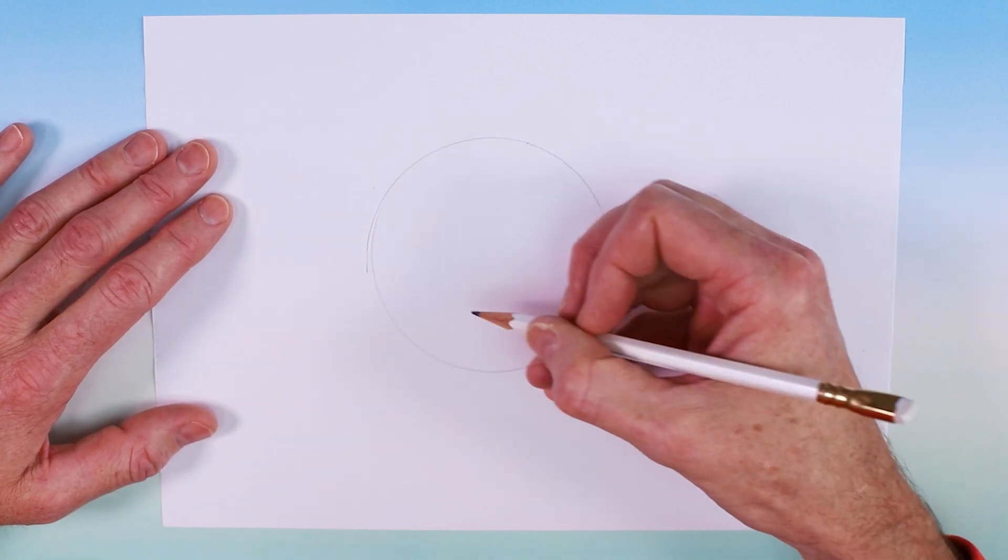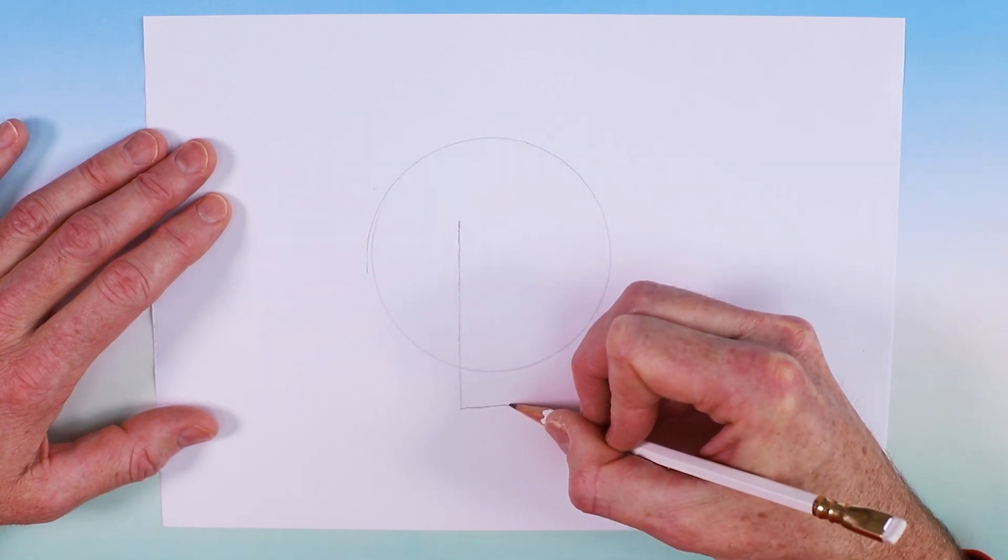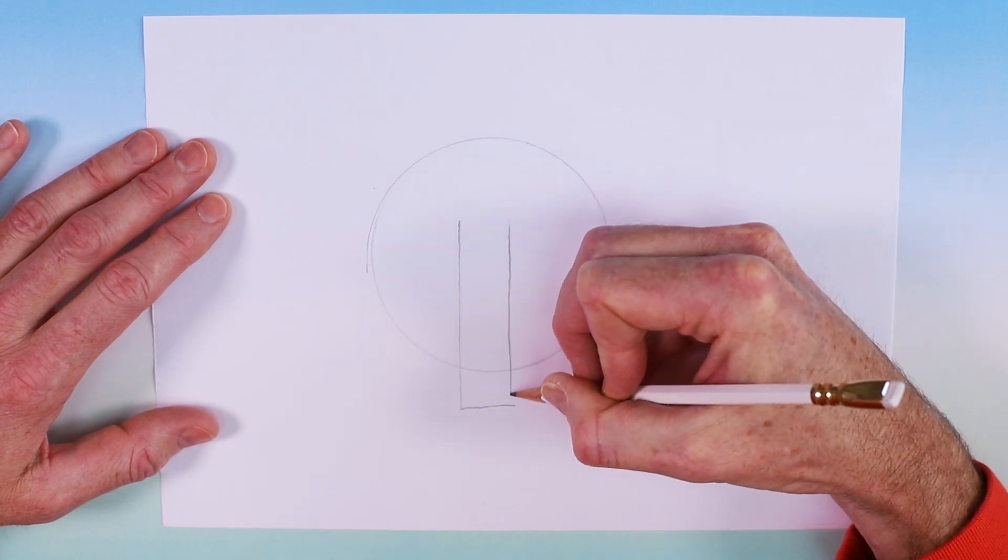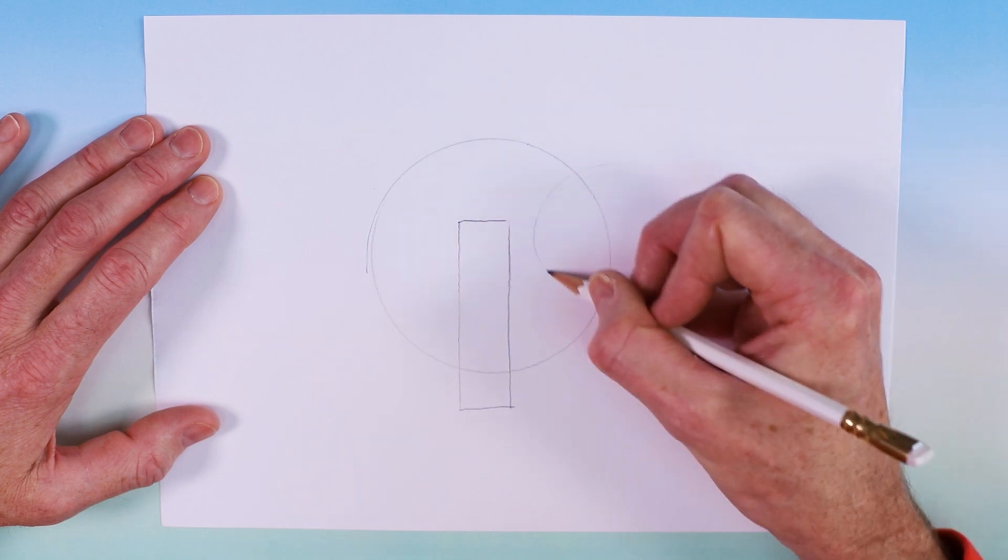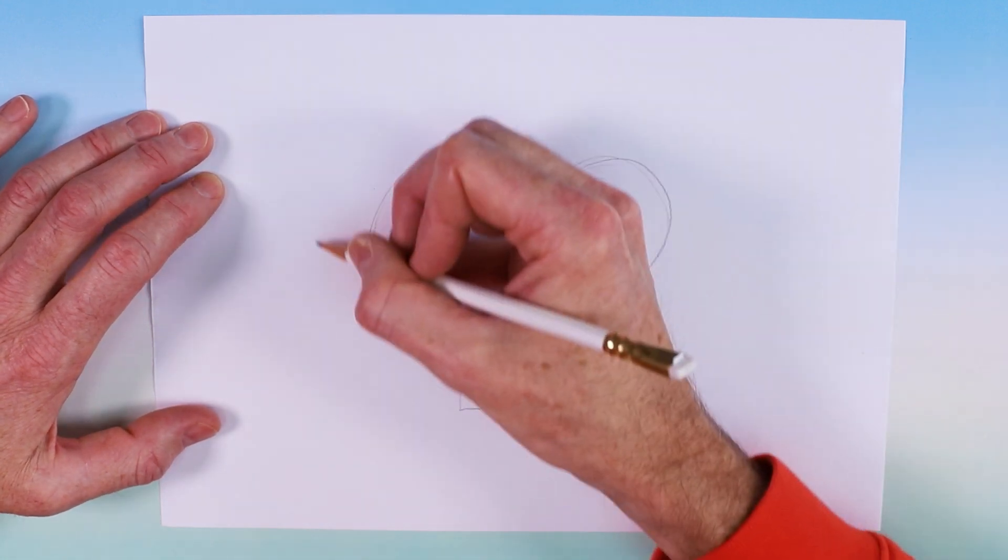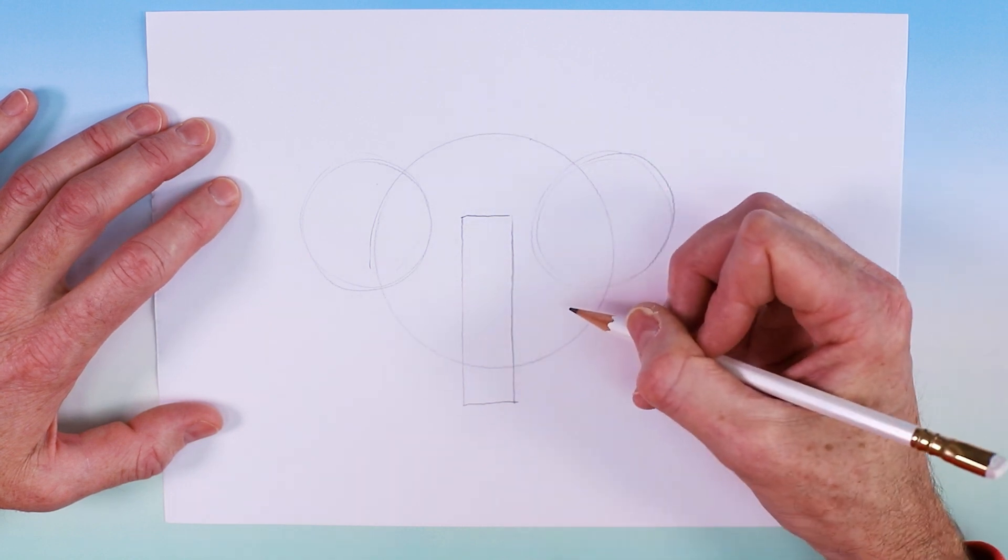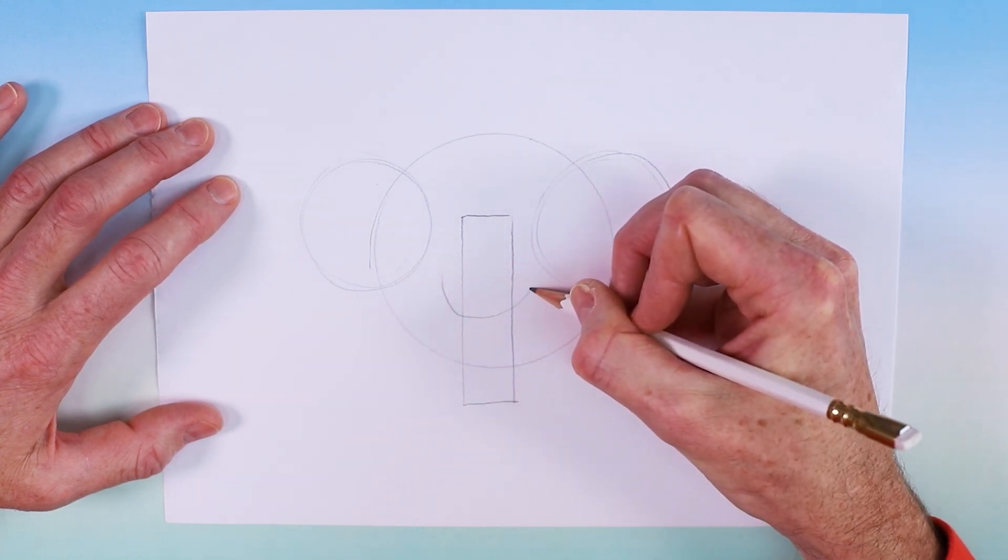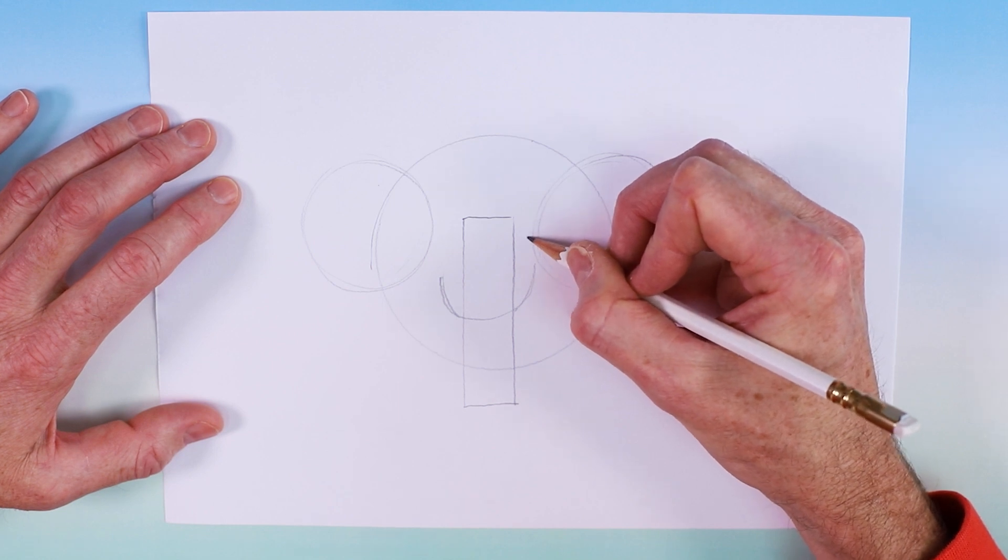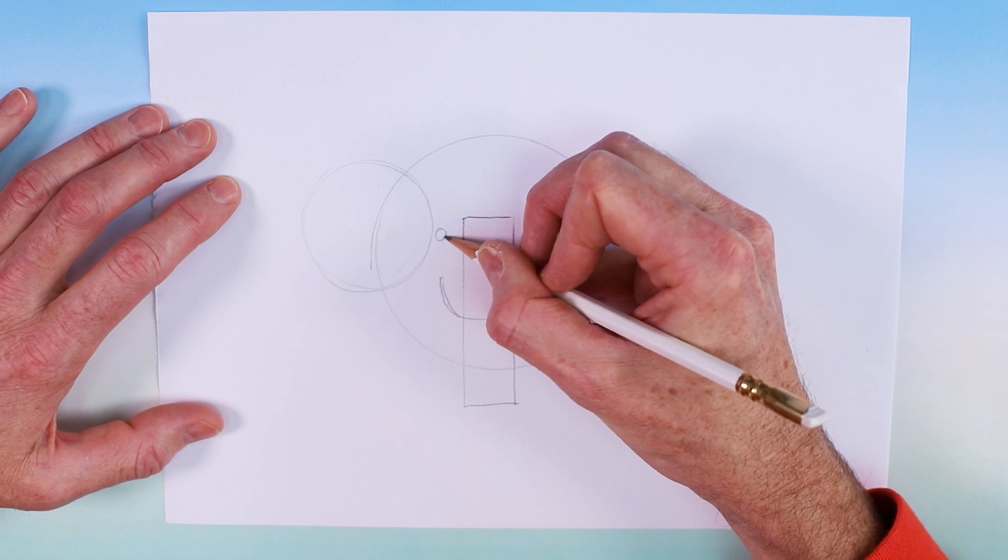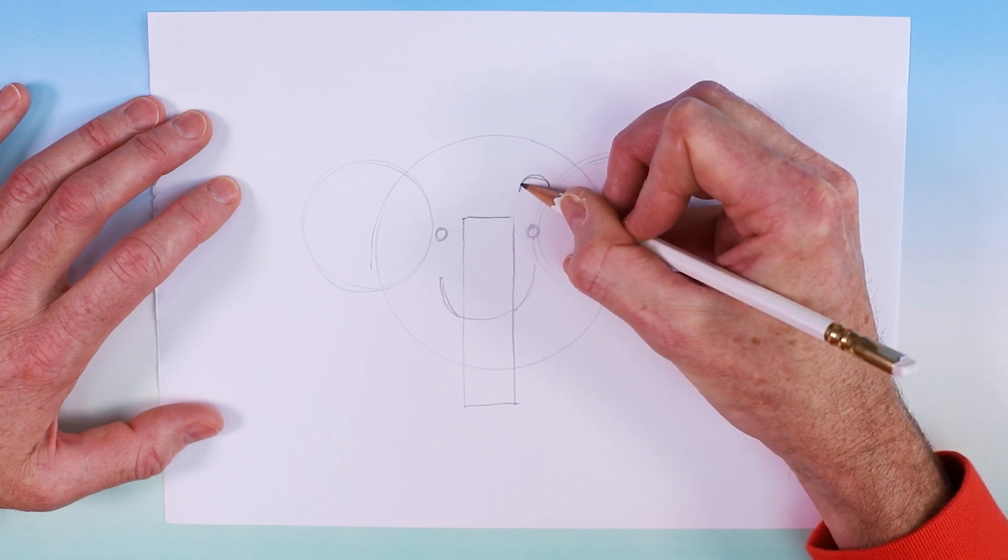Now we need to draw a long, thin rectangle for the trunk right in the middle of the circle. Either side of that we're going to draw some smaller circles that will make the ears. Next we're going to draw a semi-circle to make the mouth. And just above that we're going to have two small circles for the eyes. And we can't really have any eyes without eyebrows. So just above the eyes we've got two small semi-circles.